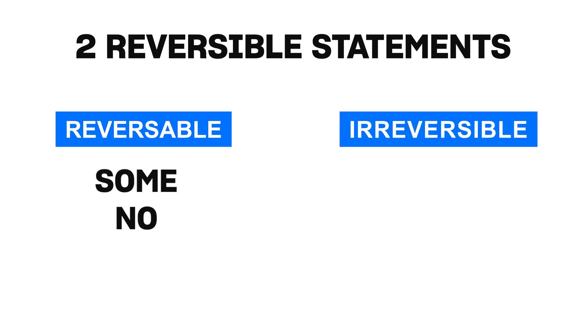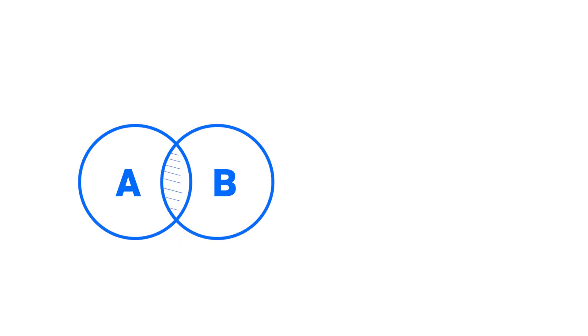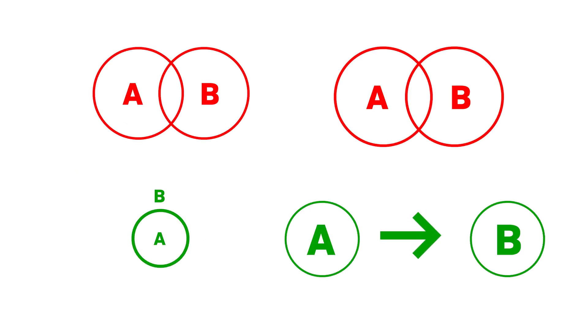Irreversible, that means which cannot be reversible, those are all and some not. That means if I write all A is B, you cannot take all B is A. Some A is not B means some B is not A does not follow. So you cannot reverse all and some not, you can reverse some and no.